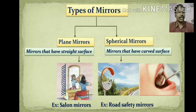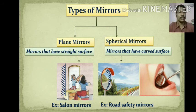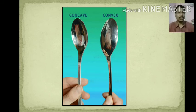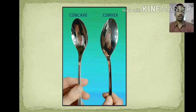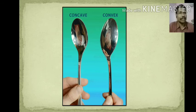Examples of spherical mirrors include road safety mirrors and dentist mirrors. Their surface is bulged out or bulged in — it is not flat but somewhat curved. A common everyday example of spherical mirrors is a spoon: one side is bulged inward and one side is bulged outward. The bulged-in side is called the concave side and the bulged-out side is called the convex side.